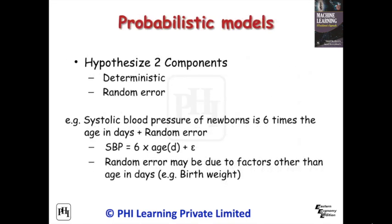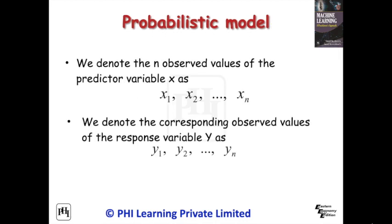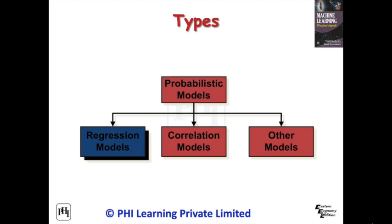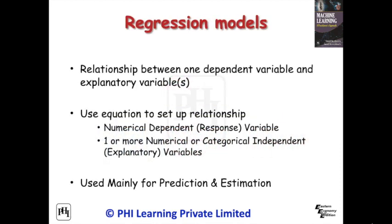A deterministic model will thus always produce the same output from a given starting condition or initial state. A probabilistic model incorporates random variables and probability distributions into the model of an event or phenomenon. While a deterministic model gives a single possible outcome for an event, a probabilistic model gives a probability distribution as a solution. Probabilistic models are broadly classified into regression models, correlation models, and other models. In statistical modeling, regression analysis is a set of statistical processes for estimating the relationships between a dependent variable and one or more independent variables. This technique is mainly used in prediction and estimation.